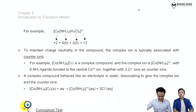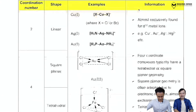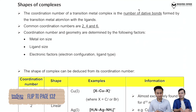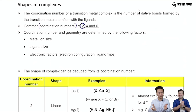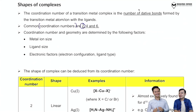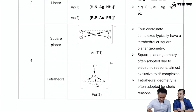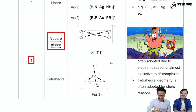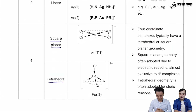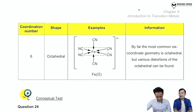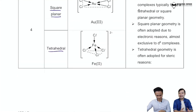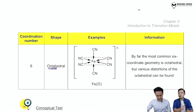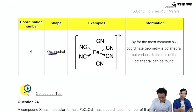Different coordination numbers give different shapes. A coordination number of two gives a linear shape. A coordination number of four can give either square planar or tetrahedral geometries. A coordination number of six gives an octahedral shape — the most common. You don't need to memorize which specific ion adopts which shape for coordination number four, but for coordination number six you are expected to know it's octahedral and to draw the 3D configuration.